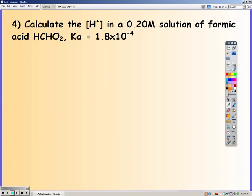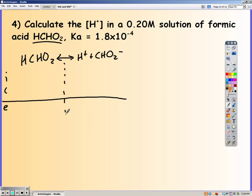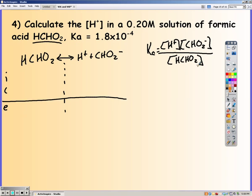Go ahead and pause the video, and try this one on your own. Here we have formic acid, and so we write our dissociation equation for it. Write the equilibrium expression. Fill in our ice table. We have 0.2 molarity, none and none. Reactant going down, product's going up.